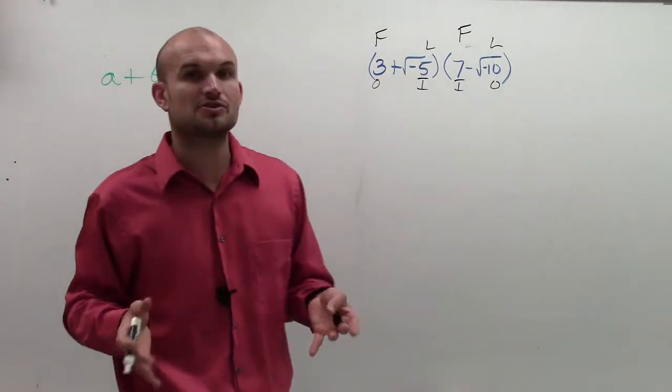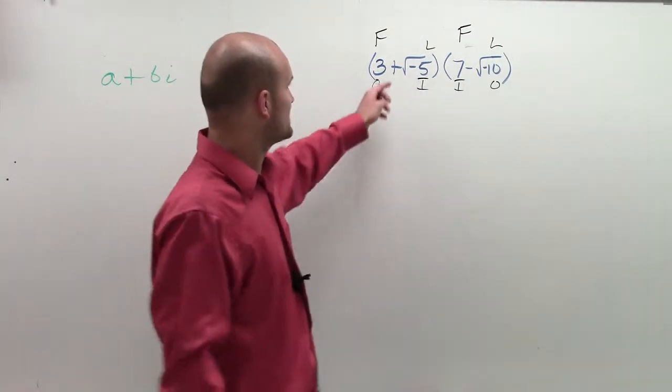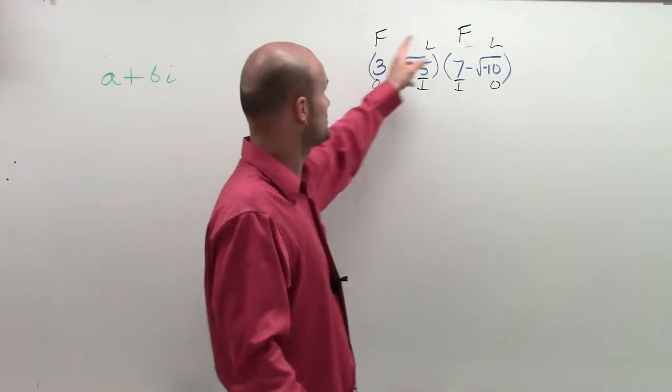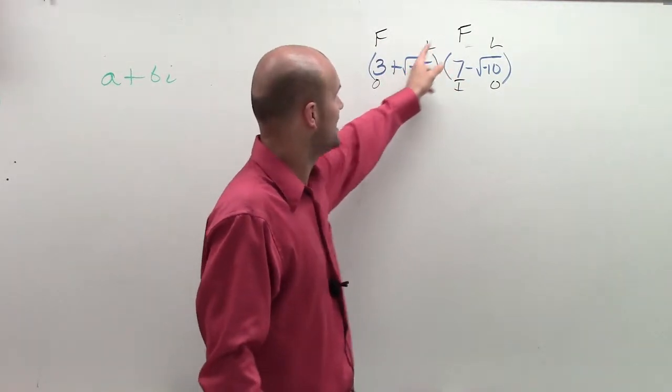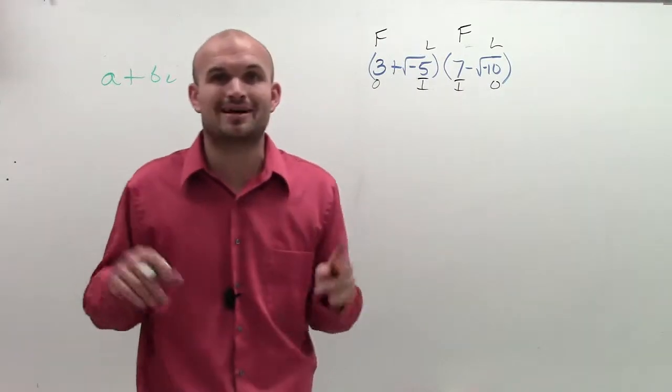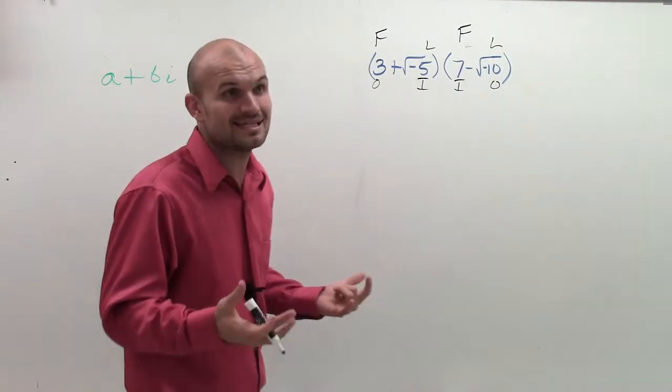So what we're going to do is multiply. When multiplying this out, remember you're doing the distributive property. First times first, outer times outer, inner times inner, last times last. So really it's just a way to do the distributive property easily that we can remember.